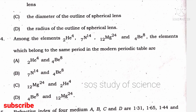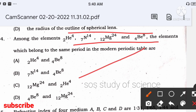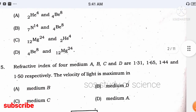Among the elements helium, nitrogen, magnesium, and beryllium, which belong to the same period in the modern periodic table? Helium is in the first period; nitrogen and beryllium are in the second period; magnesium is in the third period. So the right answer is option B — nitrogen and beryllium are in the same period.